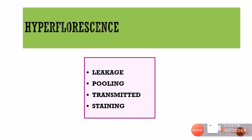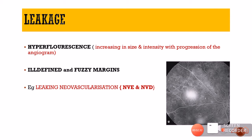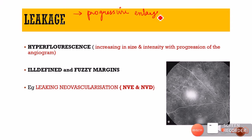Now let us talk about hyperfluorescence — increased brightness on fundus fluorescein angiography. Hyperfluorescence can occur because of four causes: leakage, pooling, transmitted fluorescence, and staining. Leakage is hyperfluorescence that progressively enlarges with ill-defined or fuzzy margins. What is happening is that the dye is coming out of leaky, incompetent blood vessels, usually in the setting of neovascularization.